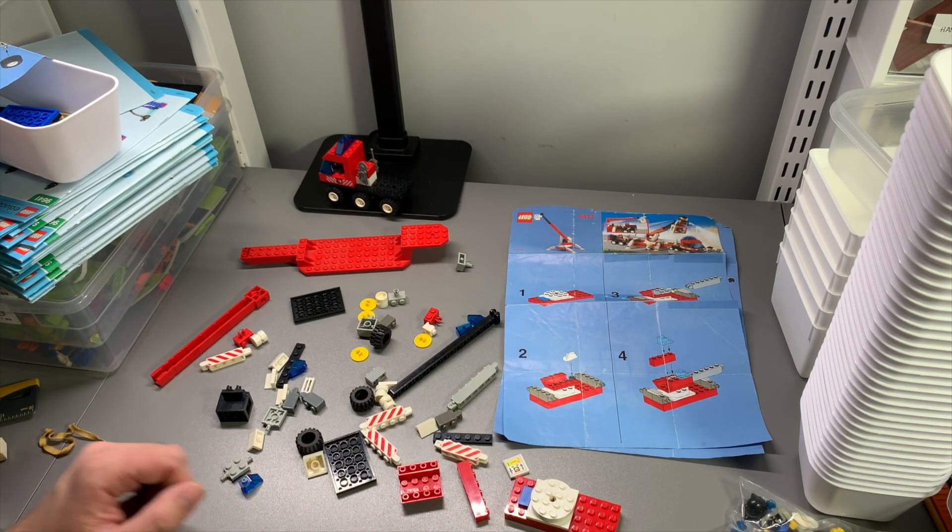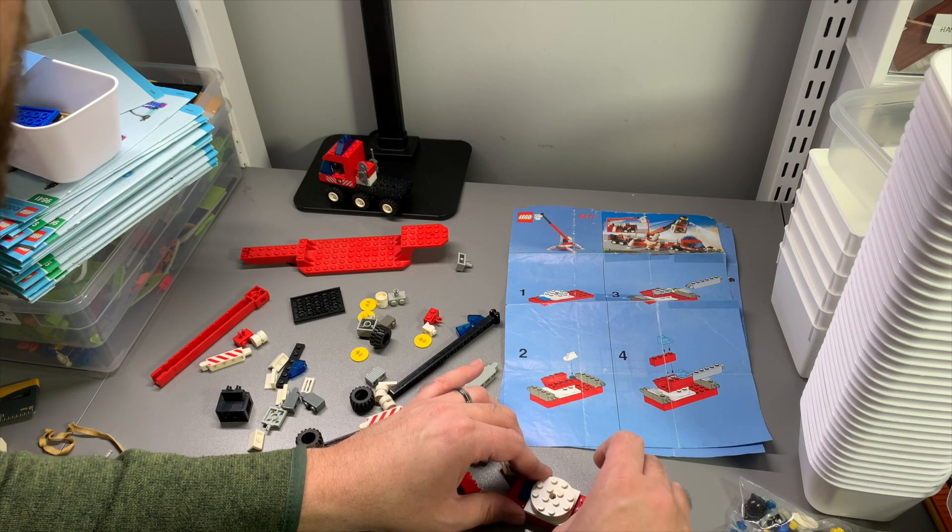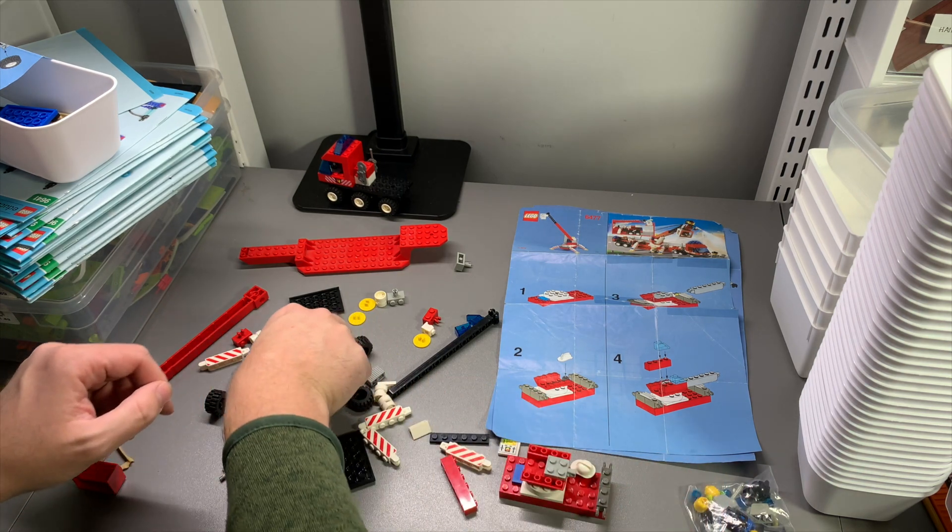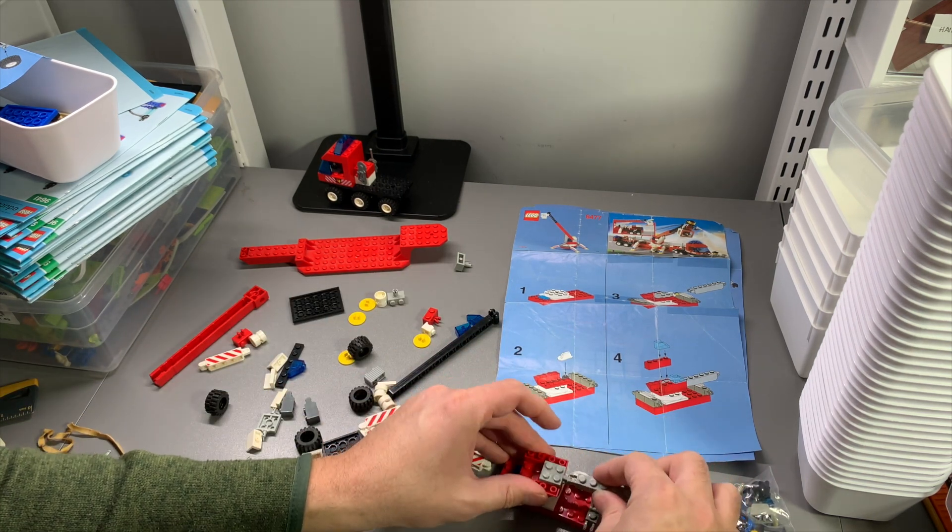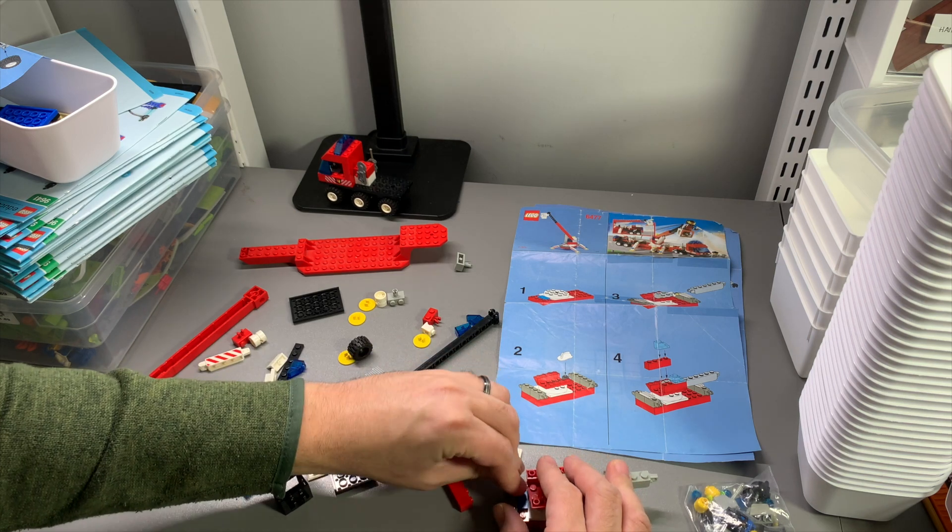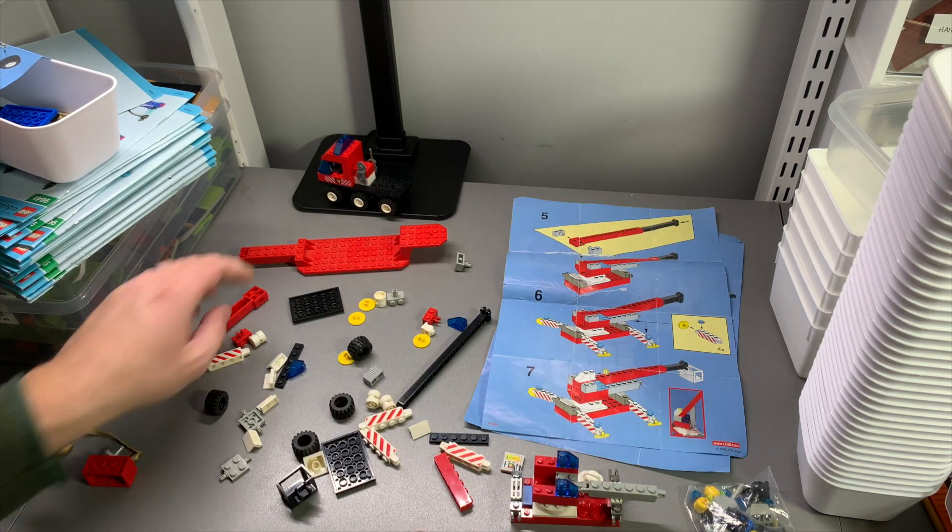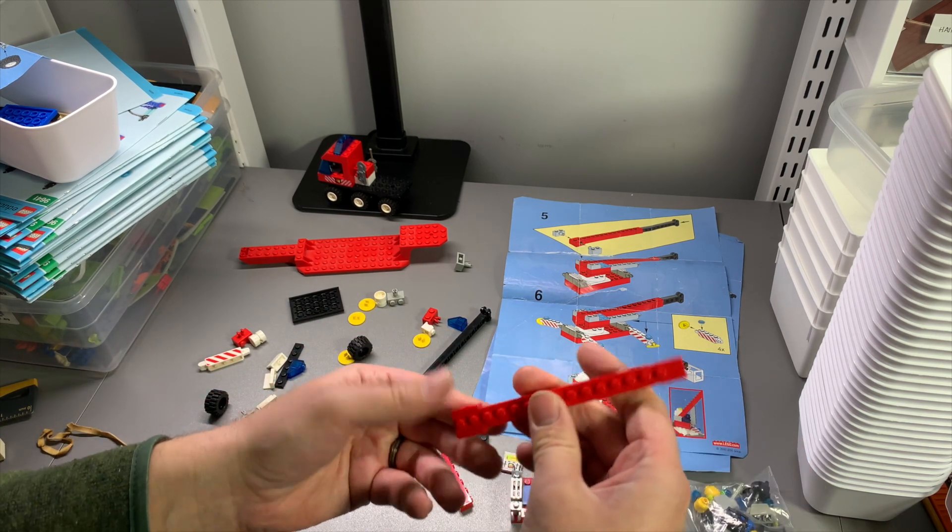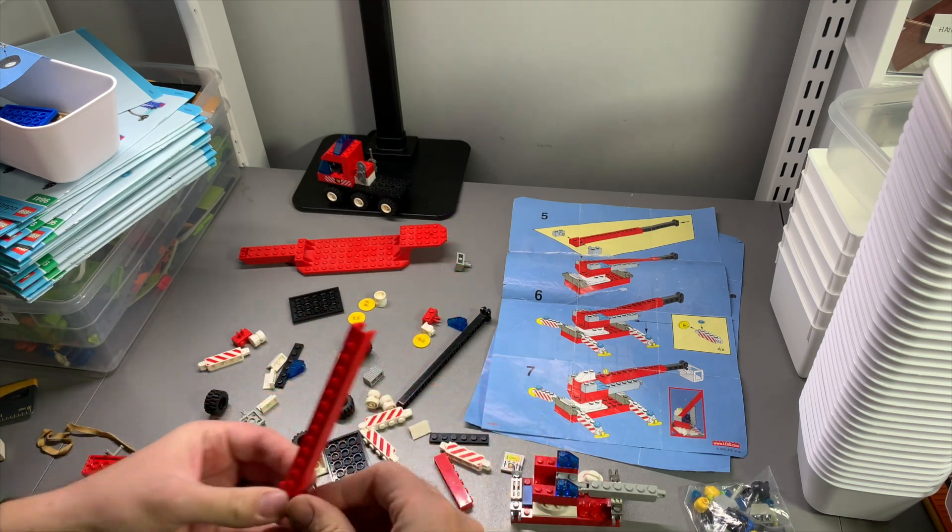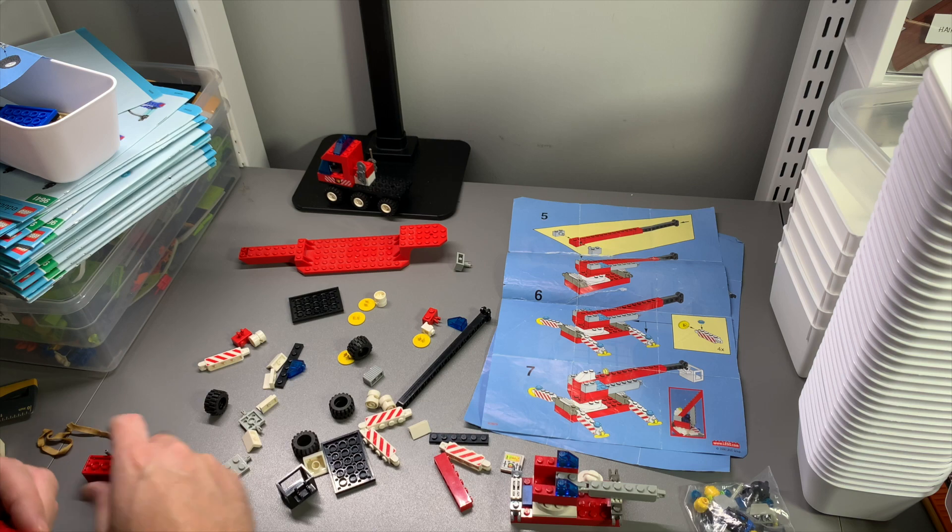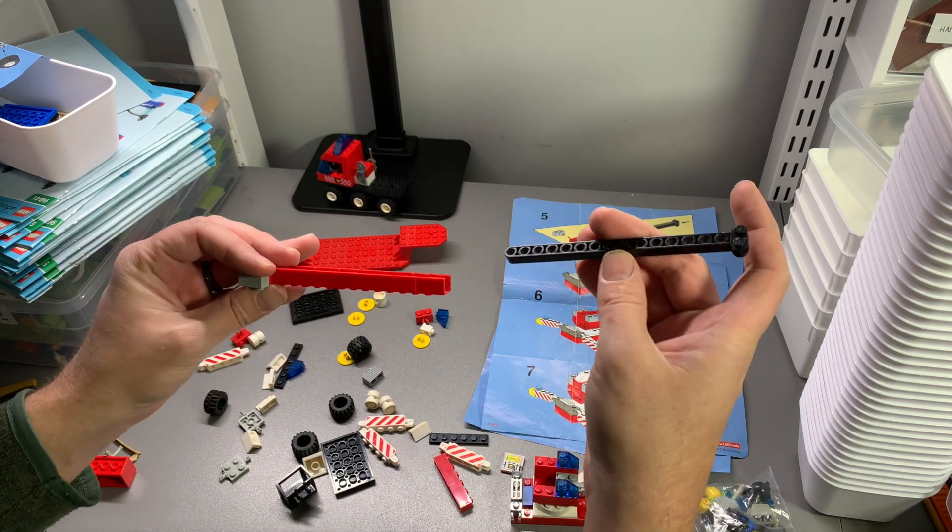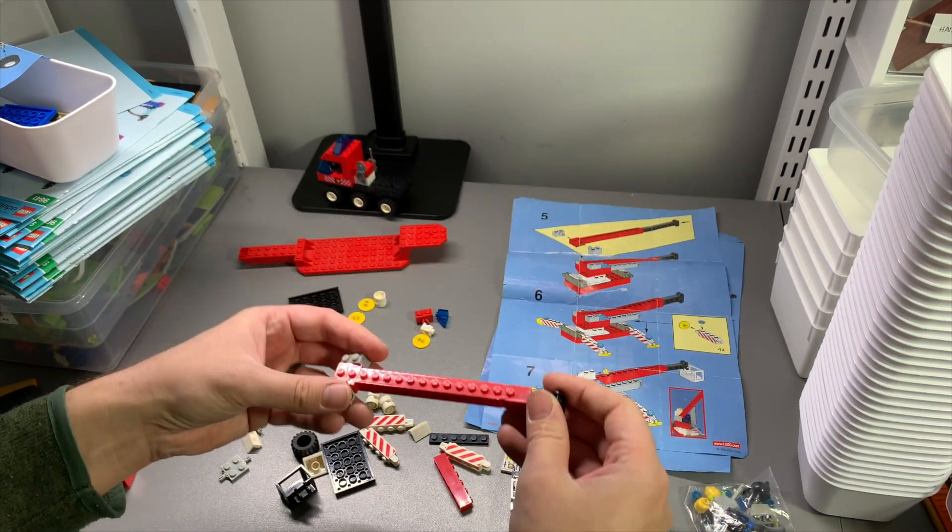Is that black? Sometimes it's hard to tell on these old instructions what the color is. I think it's black. Oh, we've got to put this one. Oh, we're supposed to do that on the front too. My bad. Oh, that's a cool piece. Another cool piece. It slides right in there.